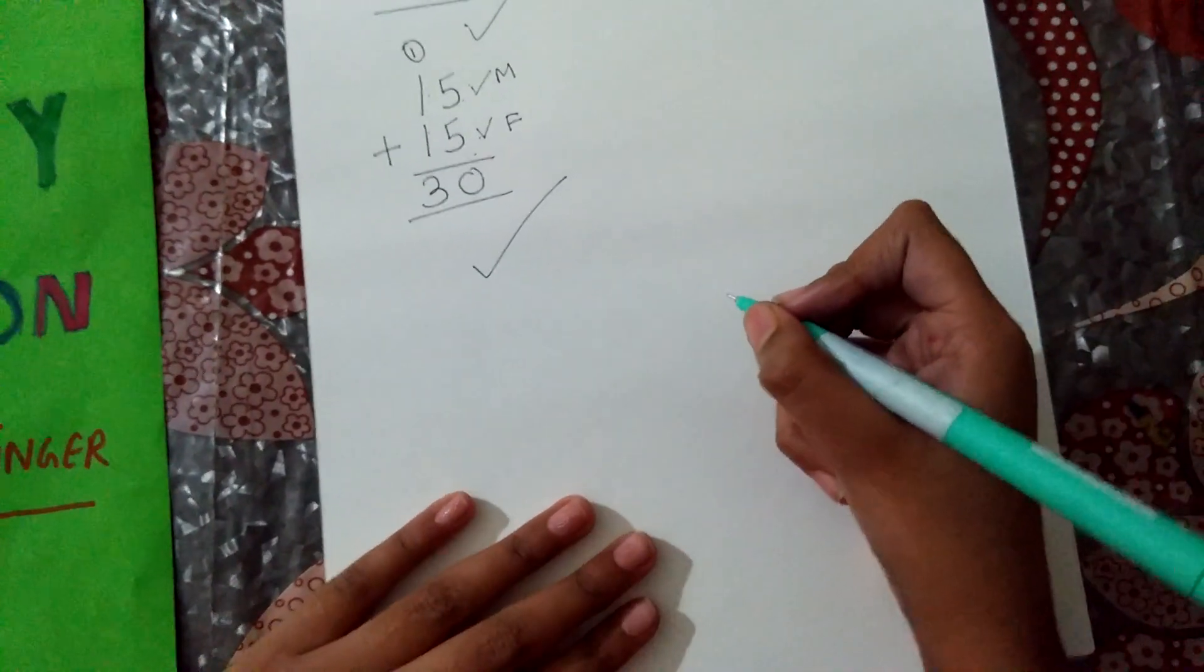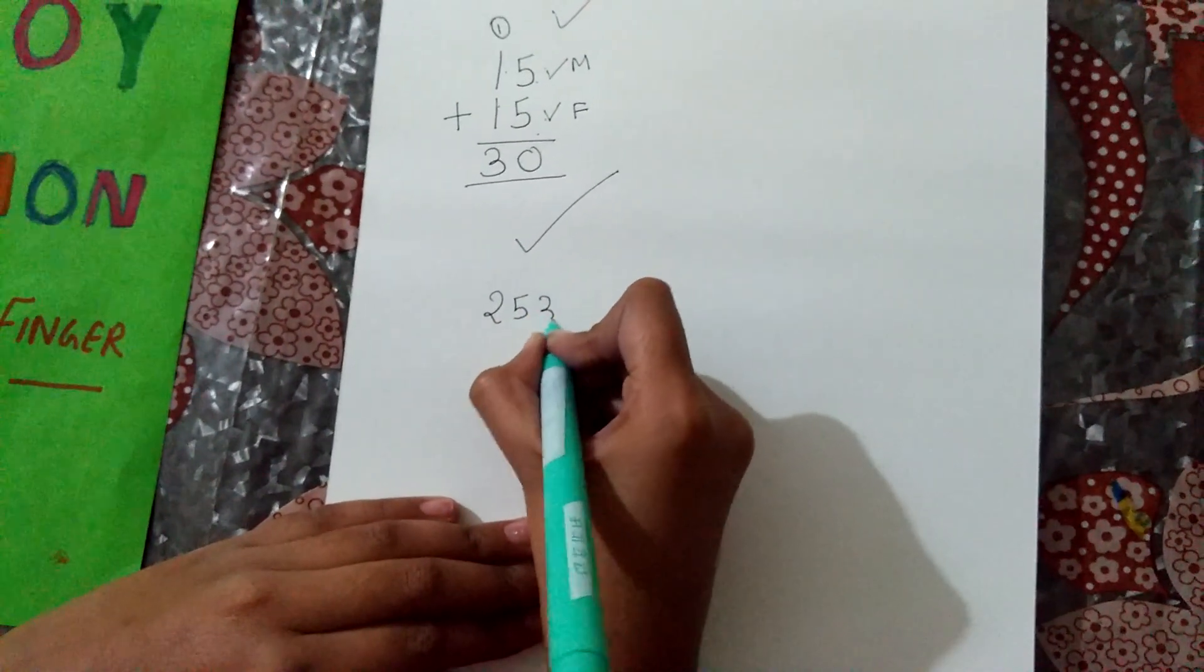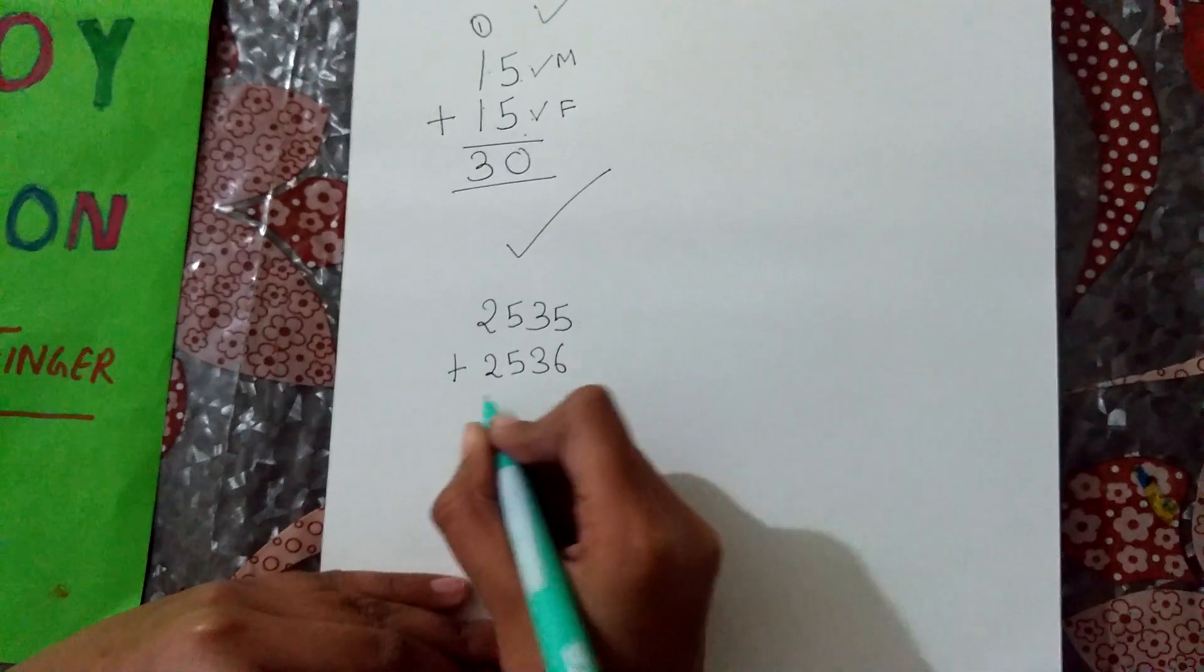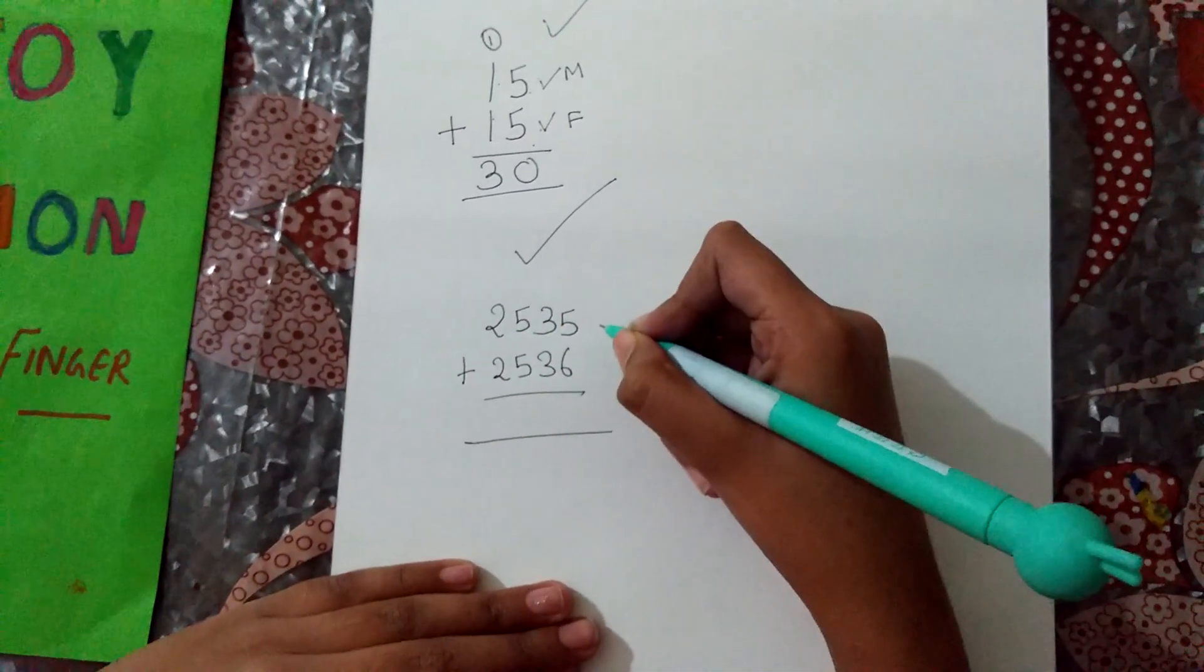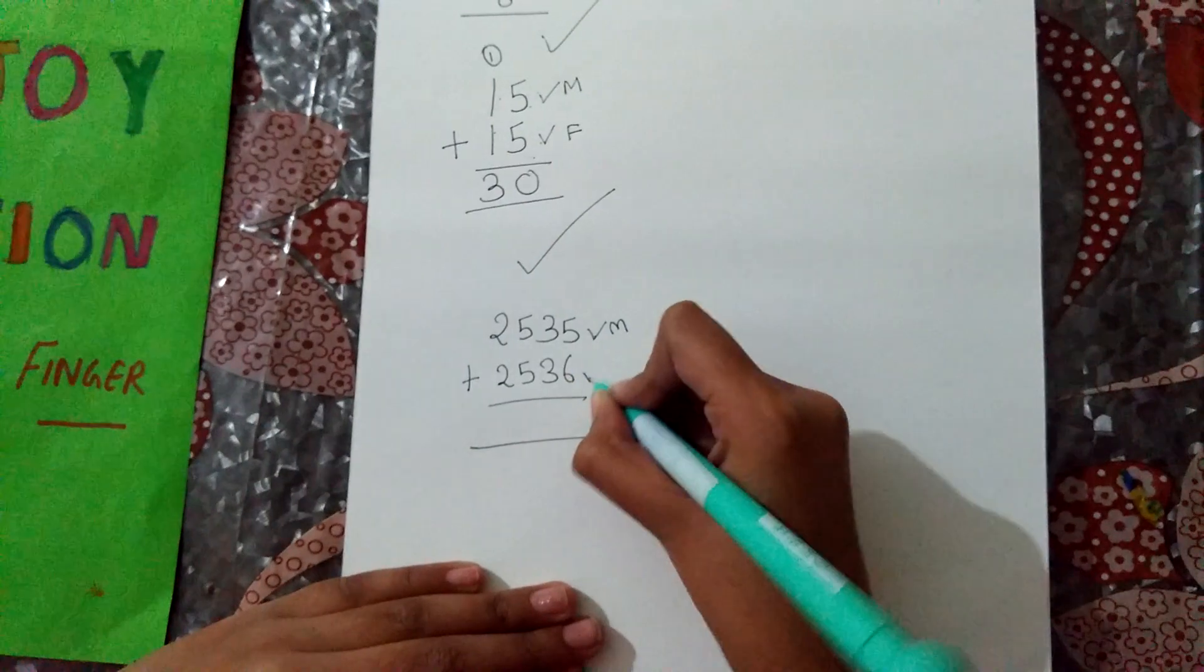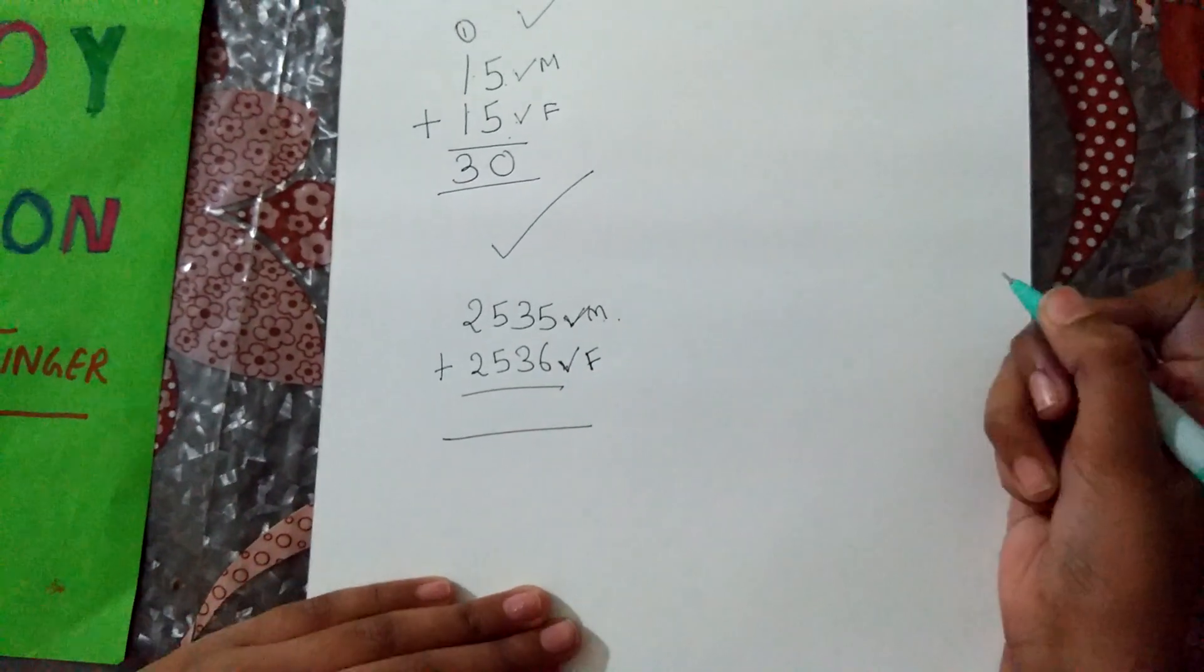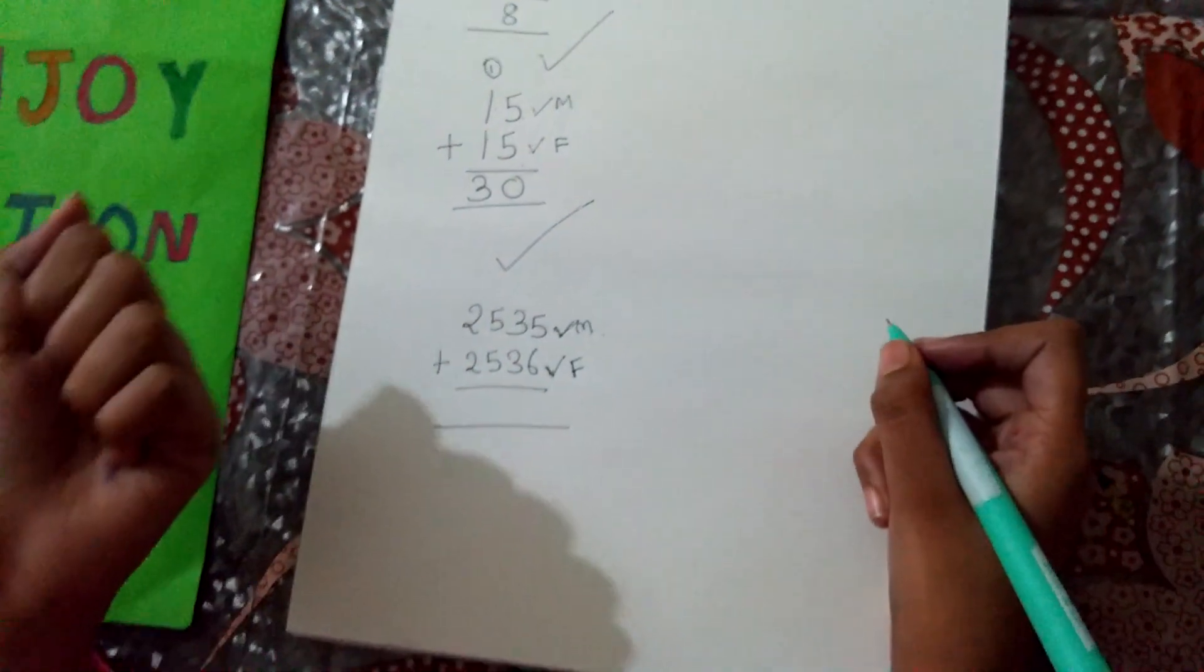The next number is 2535 plus 2536. You forget this 2, 5, 3. Only remember 5 and 6. You know 5 in the mind and 6 in the fingers. I repeat, 5 in the mind and 6 in the fingers. Now, do 5 plus 6.